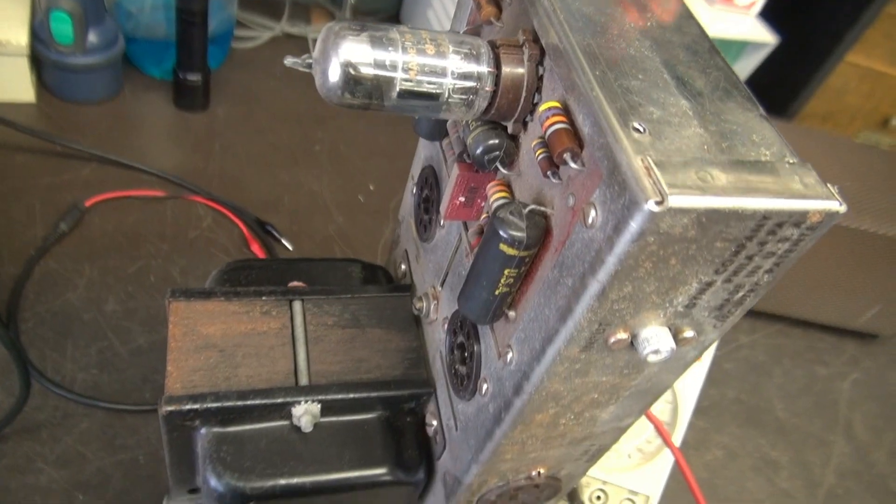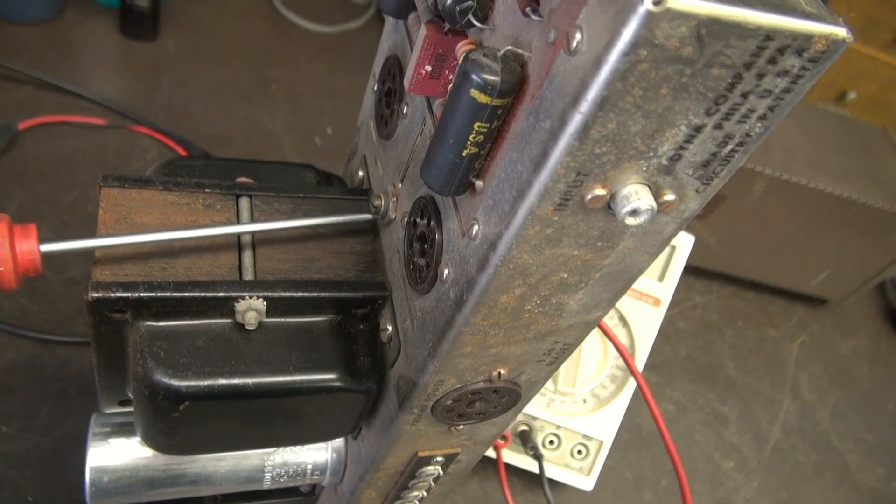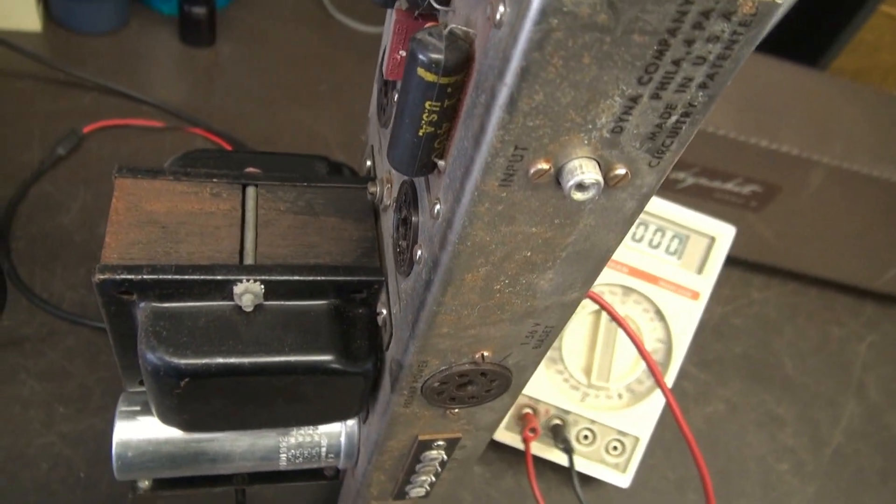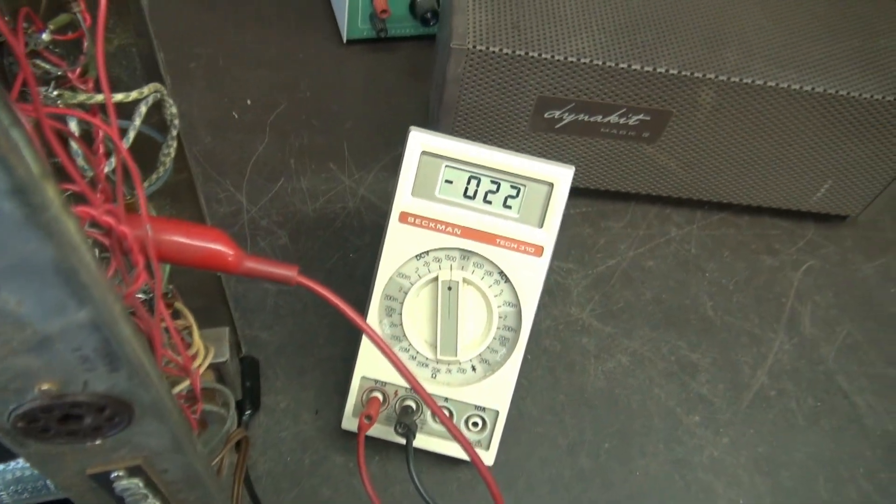So you can see I still don't have the output tubes in. Right here is that bias pot. I'm going to bring up the Variac until I see voltage on that meter. And that's a negative bias.